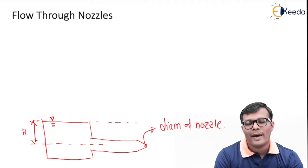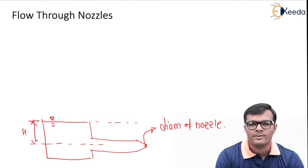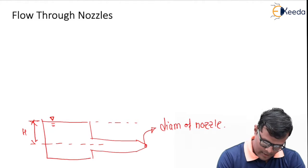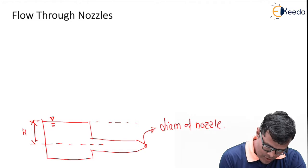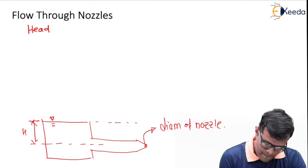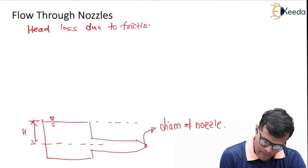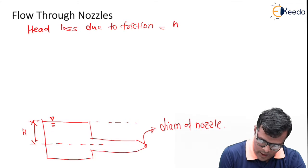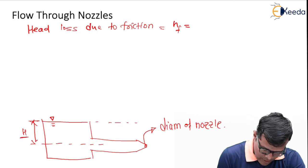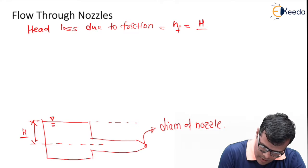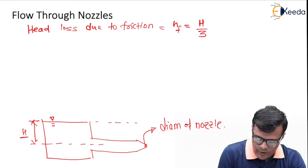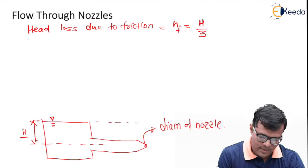For maximum power transfer, it is clear that the head loss due to friction, denoted as Hf, is equal to H divided by 3, or equivalently H equals 3 times Hf. We have also studied the derivation for this condition.